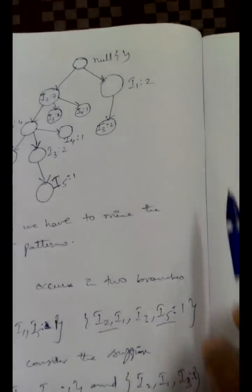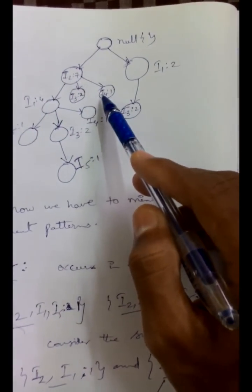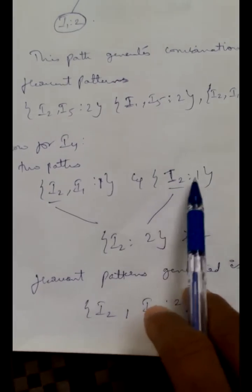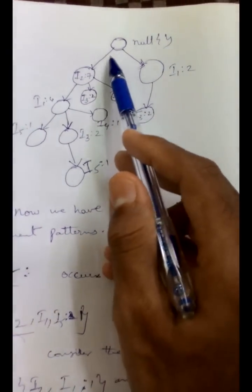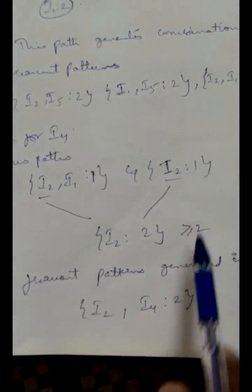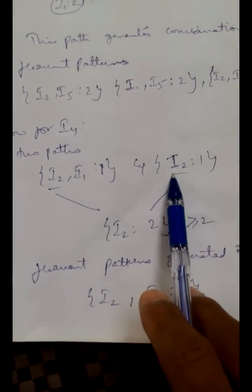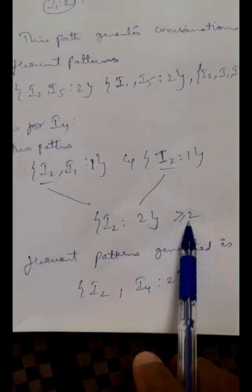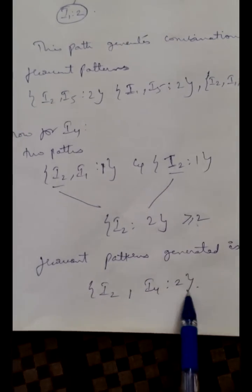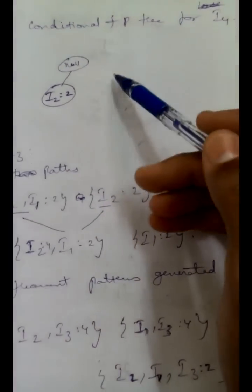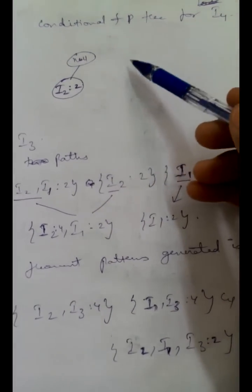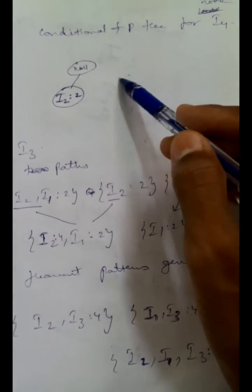Now selecting node i4, we have two paths: one directly from i2, and another from i2 → i1 → i4. We write these as: i2, i1 with count 1 and i2 with count 1. The common element i2 appears in both paths, giving i2 a count of 2, which meets the minimum support. The frequent pattern generated is {i2, i4}:2. The conditional FP tree for i4 is: null → i2(2).